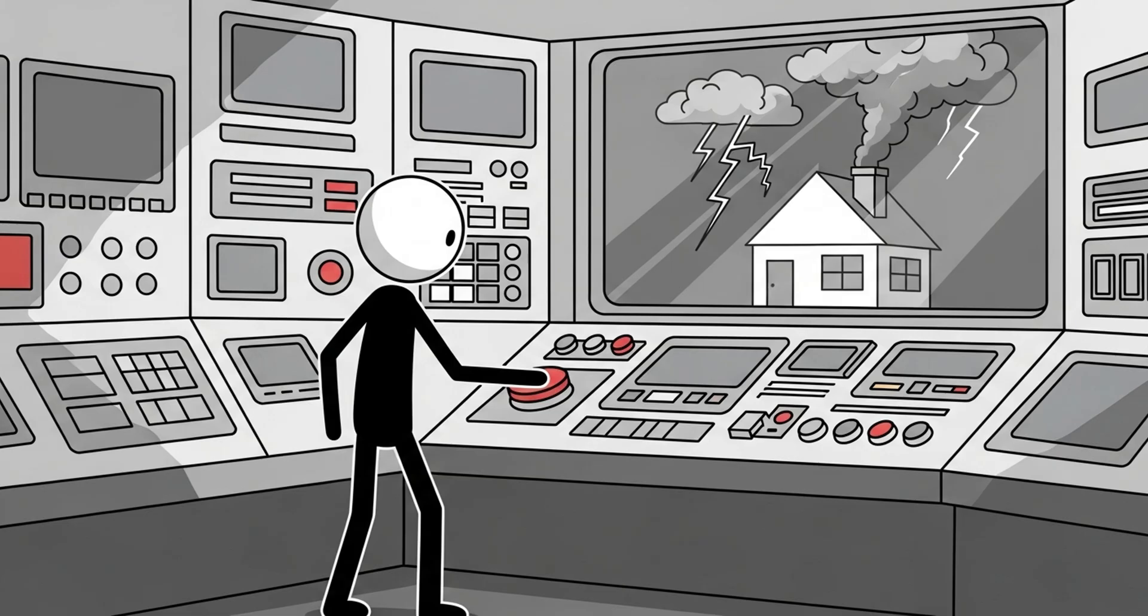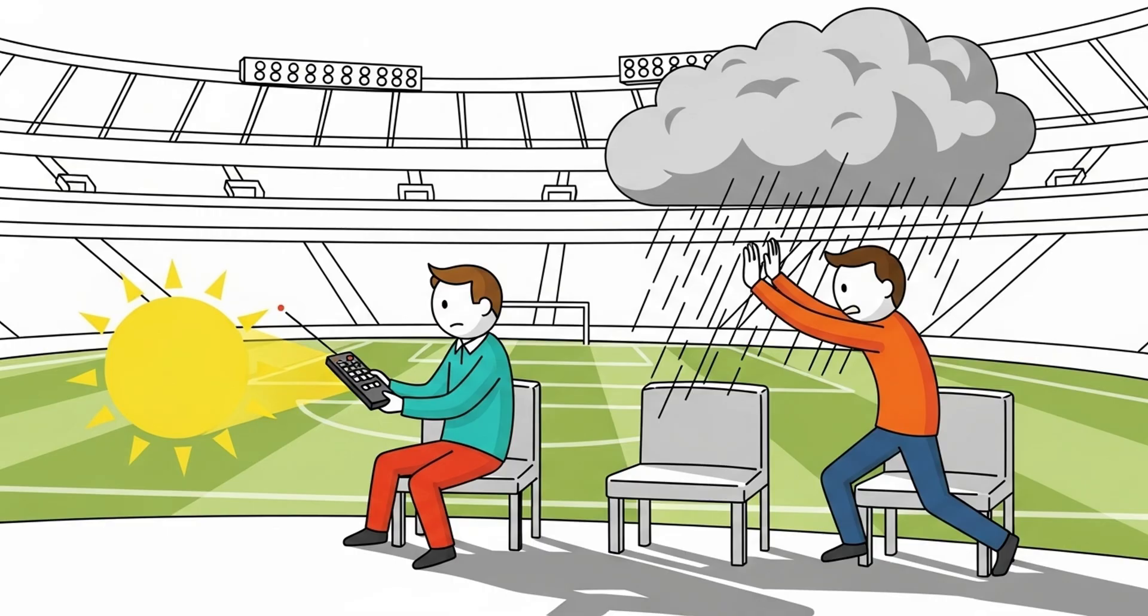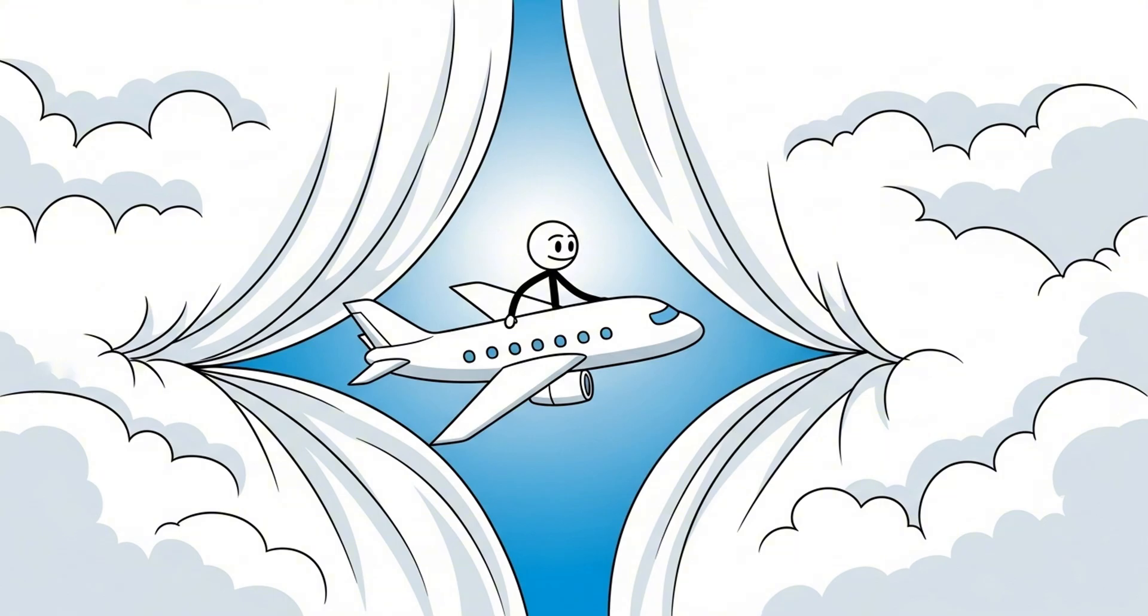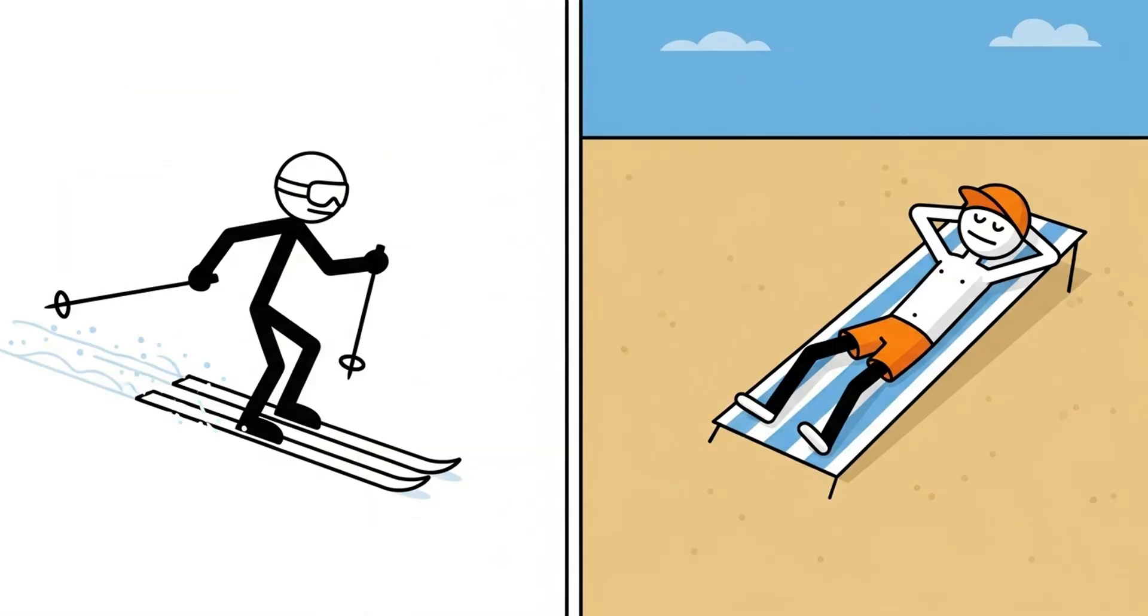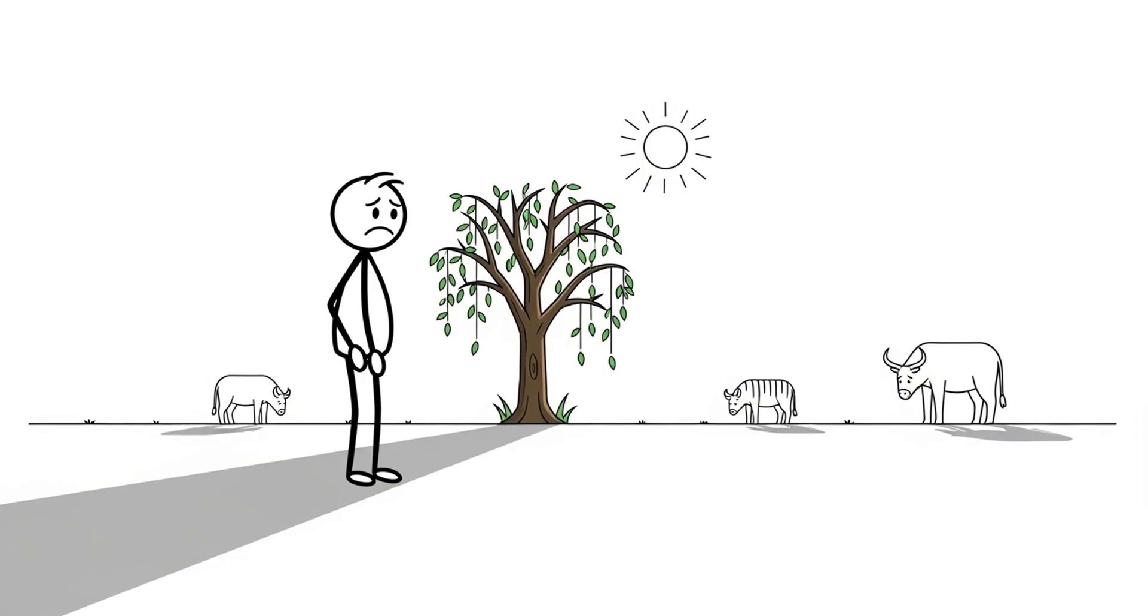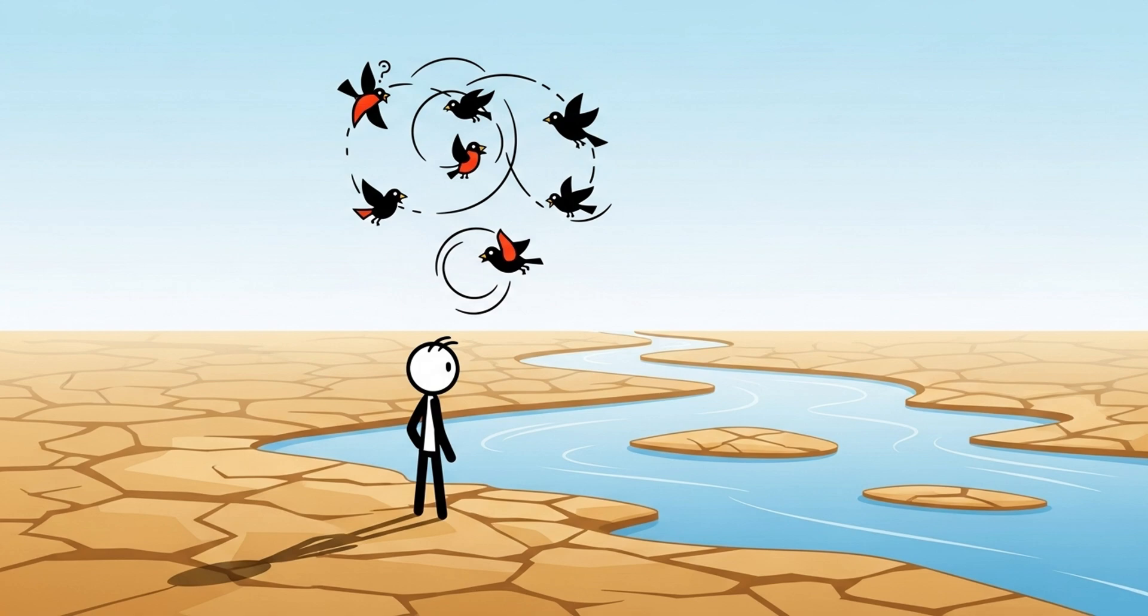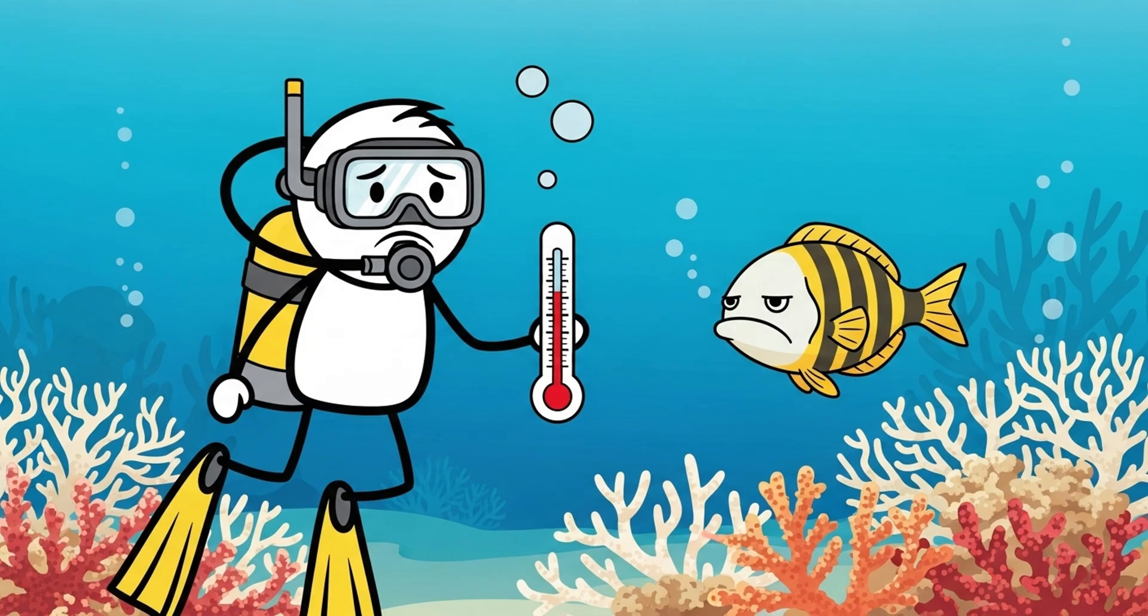Entire industries would change. No more storm delays for shipping or airlines. Tourism would boom. Perfect ski slopes, endless summer resorts. But ecosystems need unpredictability. Without it, nature might collapse. Migrating birds might lose their patterns. Rivers could dry up. Coral reefs could bleach without seasonal storms to cool the waters.